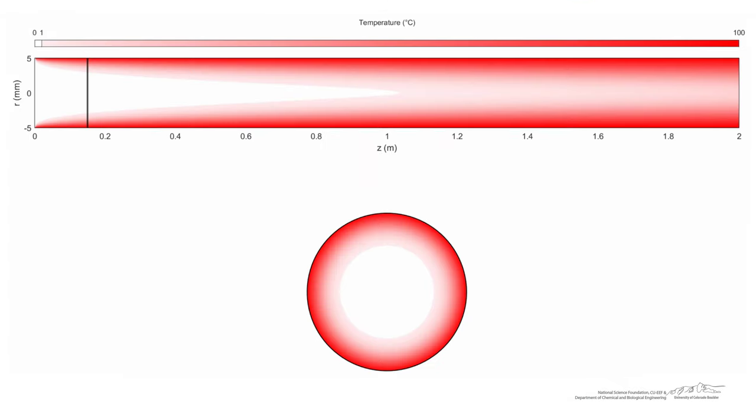The first thing we'll start with is a simulation that shows the temperature both as a function of Z and as a function of the radius. Here I've selected a pipe that has a length of two meters and a radius of five millimeters. So pay attention to these graphs, know that these are not to scale. I've dramatically increased the vertical axis on it.